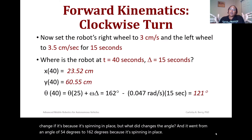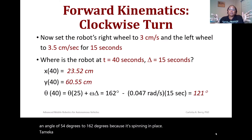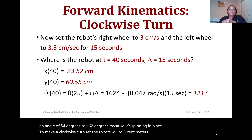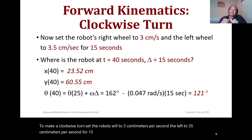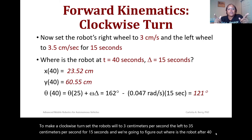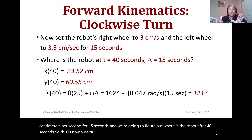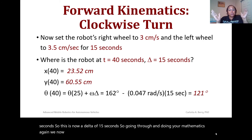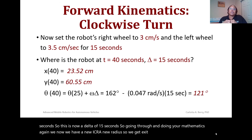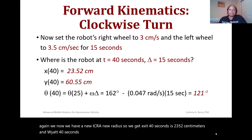Now, to make a clockwise turn, set the robot's right wheel to 3 cm/s and the left wheel to 3.5 cm/s for 15 seconds. We figure out where the robot is after 40 seconds total, with delta = 15 seconds. Going through the mathematics with the new ICR and new radius, x at 40 seconds is 23.52 cm and y at 40 seconds is 60.55 cm.